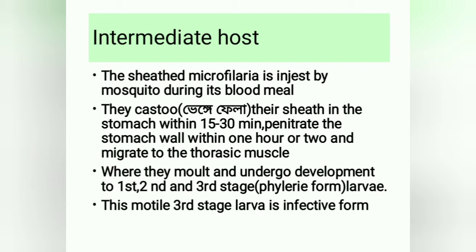Intermediate host: the sheathed microfilaria is ingested by the mosquito during its blood meal. They cast off their sheath in the stomach within 15–30 minutes, penetrate the stomach wall within one to two hours, and migrate to the thoracic muscles where they develop through first, second, and third larval stages — the filariform stage. The motile third-stage larva is the infective form.